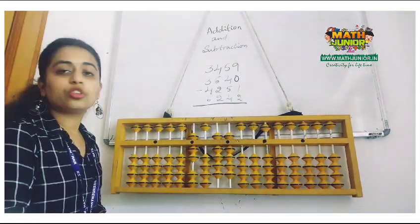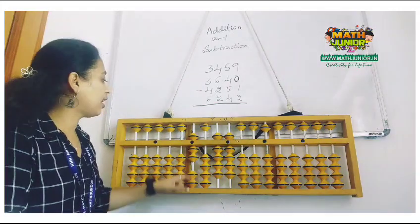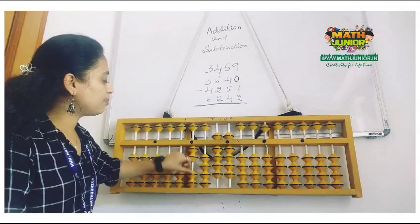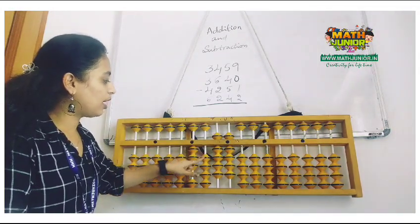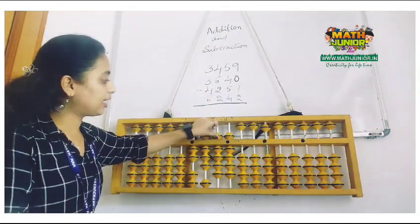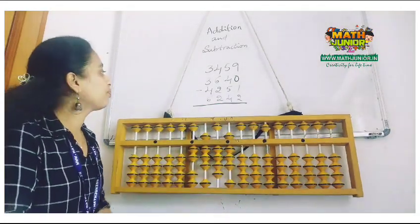Next, minus 4251. I want to remove 4000 here, so minus 5000 plus 1000, minus 200 minus 1000 plus 800, minus 50 directly, then minus 1 directly.